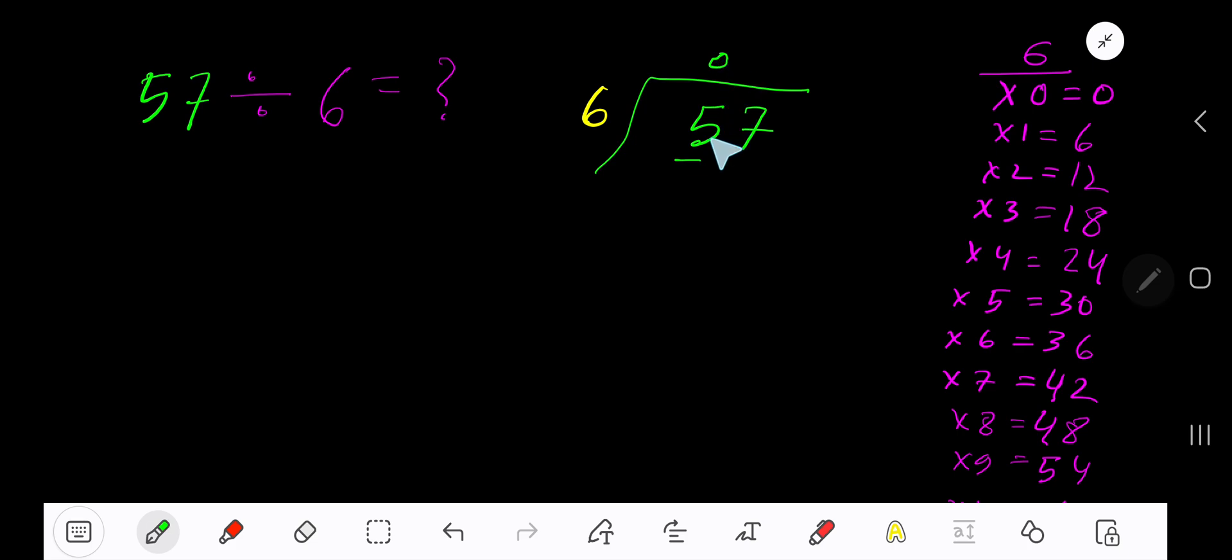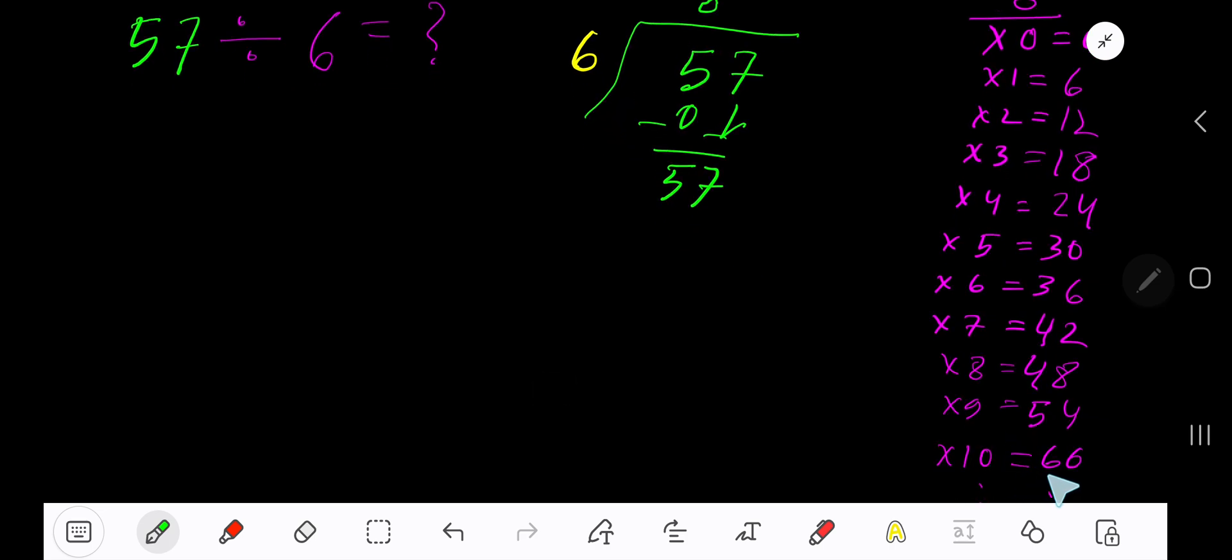0 times, as our current dividend 5 is less than 6. So 0 times 6 is 0. Subtract, we're getting 5. Bring down the next digit. 6 goes into 57 how many times? Okay, 10 times which is 60, and this is greater.